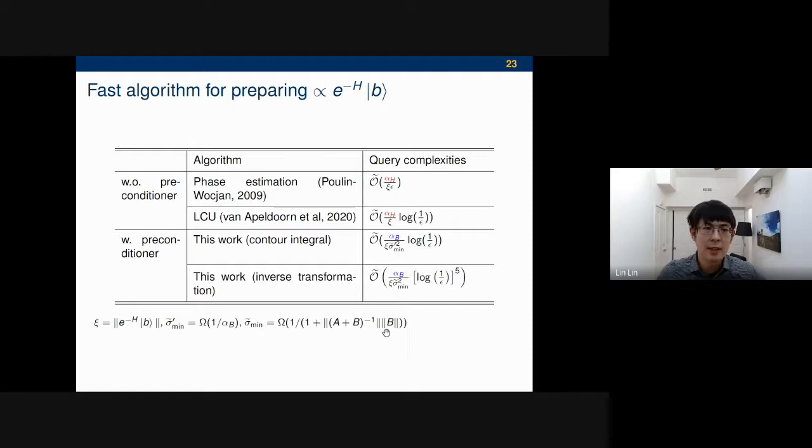This would be my last slide. For clarity, we can compare the cost of preparing this state with some other techniques in the literature. As I said, if you choose this B to be the maximally mixed state and normalize it, this should give you the Gibbs state. The first work, or one of the earlier works, is given by Poulin and Wocjan in PRL in 2009. There, the dependence has this alpha_H dependence because there's no preconditioning, but there's a 1 over epsilon dependence. Last year, van Apeldoorn and collaborators improved this from log 1 over epsilon to log log 1 over epsilon. Our work using the contour integrals maintains this polylog 1 over epsilon dependence, and the dependence here is only on B. So thank you very much for your attention.